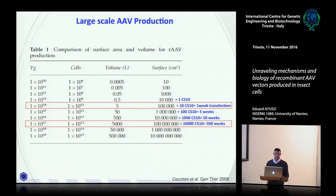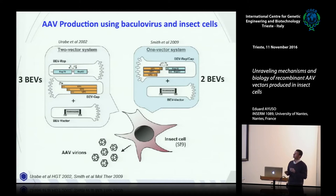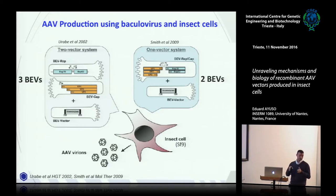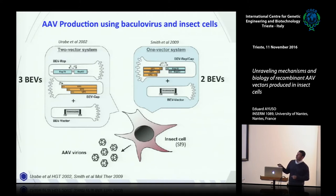One system described for the first time in 2002 by Rob Cotten's team at the NIH was the idea of using insect cells — for instance SF9 cells. Insect cells are very robust: they grow easily in suspension, their doubling time is about 24 hours, and they have been used for many other systems including recombinant proteins and vaccines. Rob's idea was to create a system for making AAV in these insect cells.